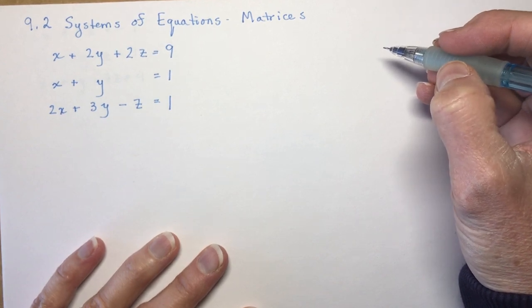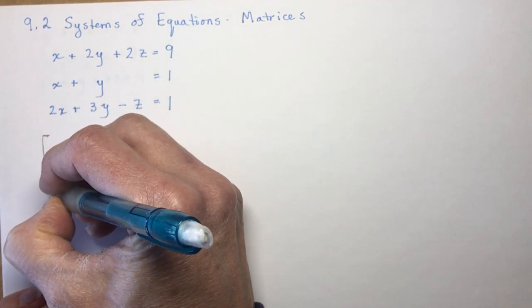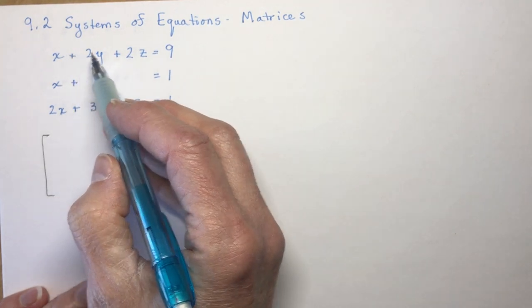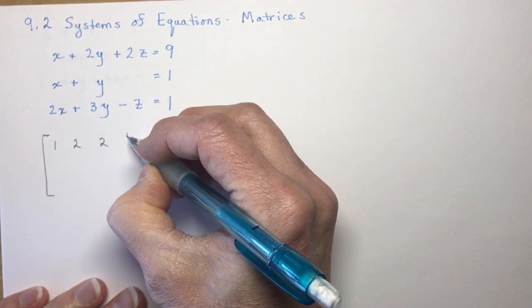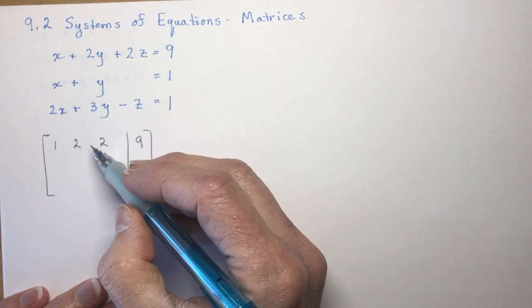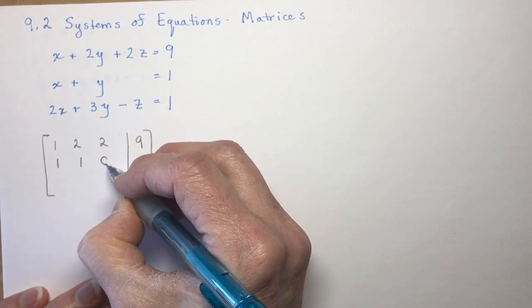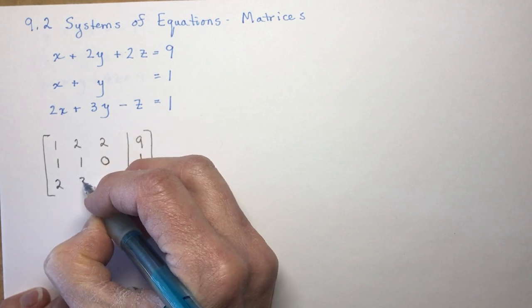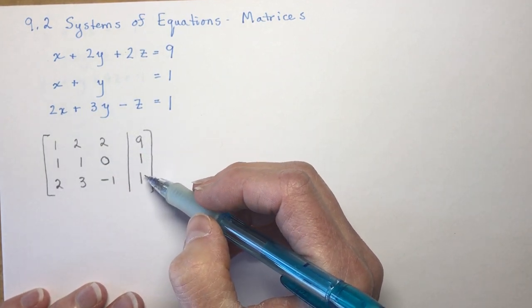Let's write out the augmented matrix for the first example. You write a big bracket, and rows go across while columns go down. My first row is 1, 2, 2, equals 9 — so you put a line there separating the variables from the constants. The second row is 1, 1, 0 (no z term, so you must put a placeholder), and 1. The bottom row is 2, 3, minus 1, and 1. This is called an augmented matrix.